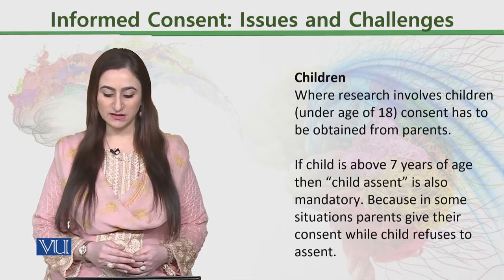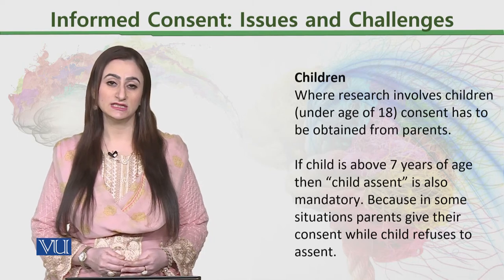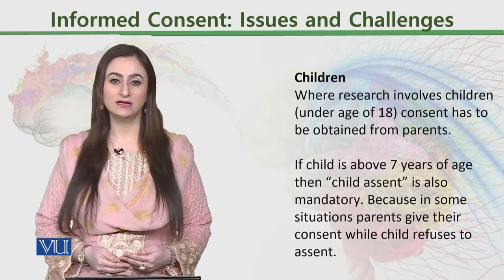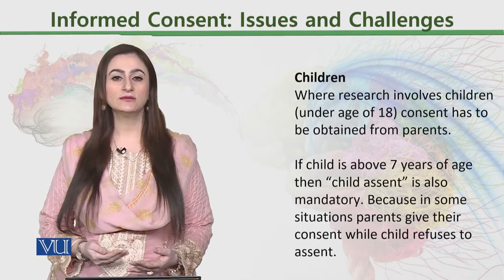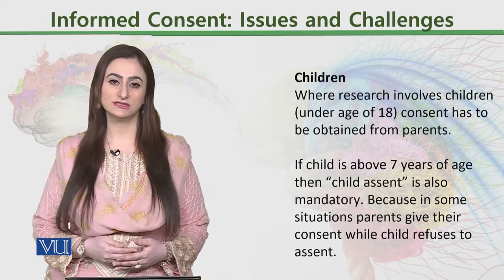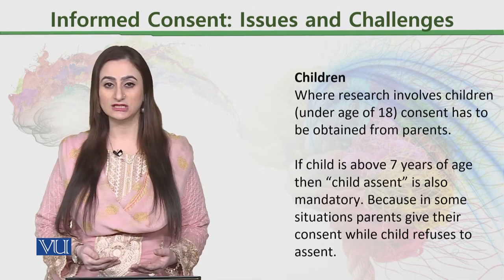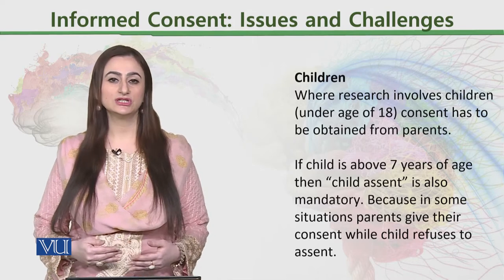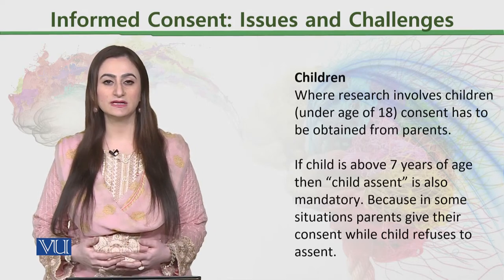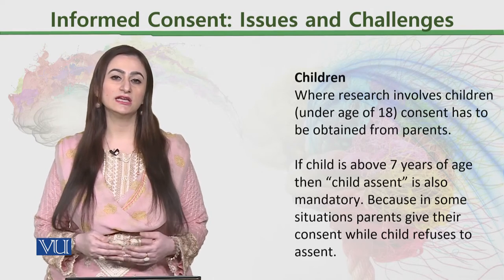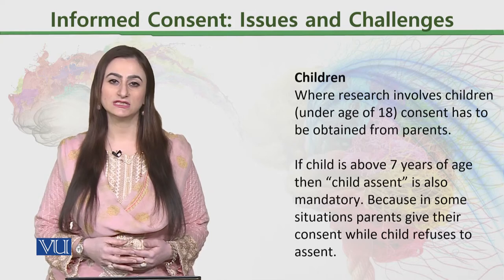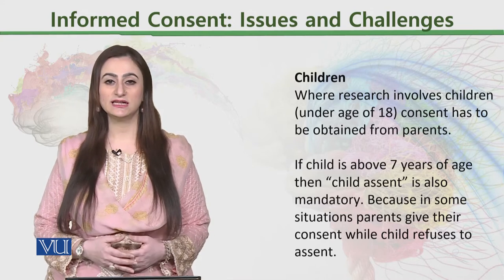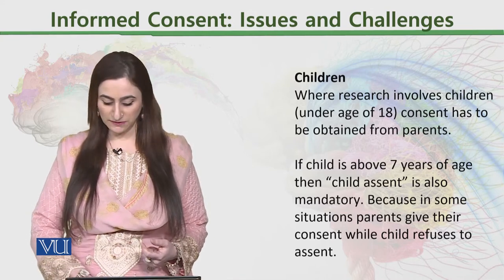In some situations, parents give their consent while the child refuses to assent. Parents may understand that it is a good opportunity for the child, but the child is not comfortable and says they don't want to participate in the research study. For example, it may be a simple running study where students are asked to run, but they don't want to participate. So child assent is also important if the child is above the age of 7.